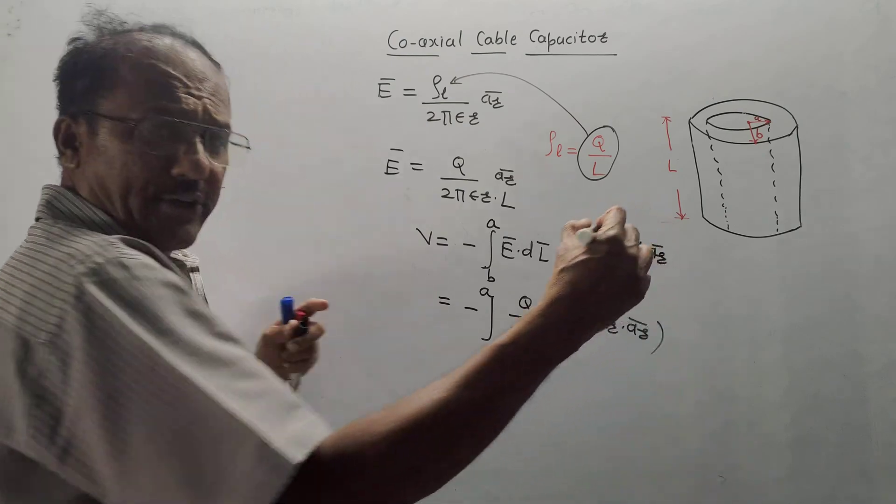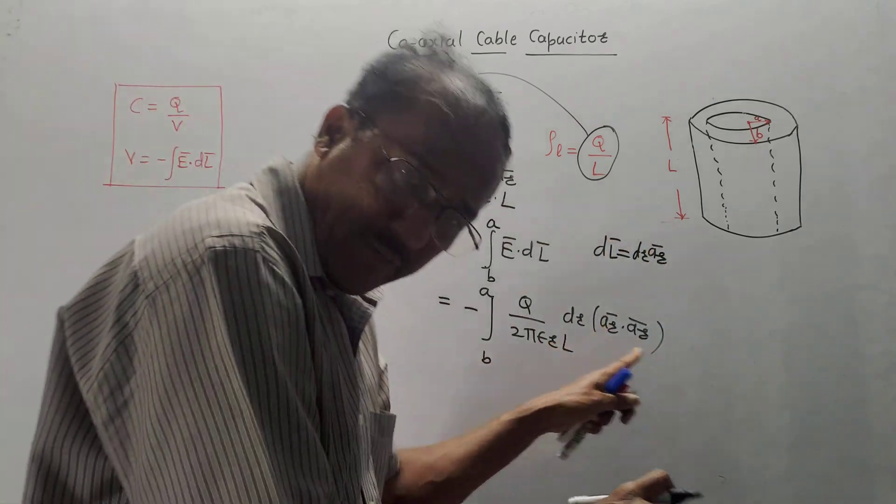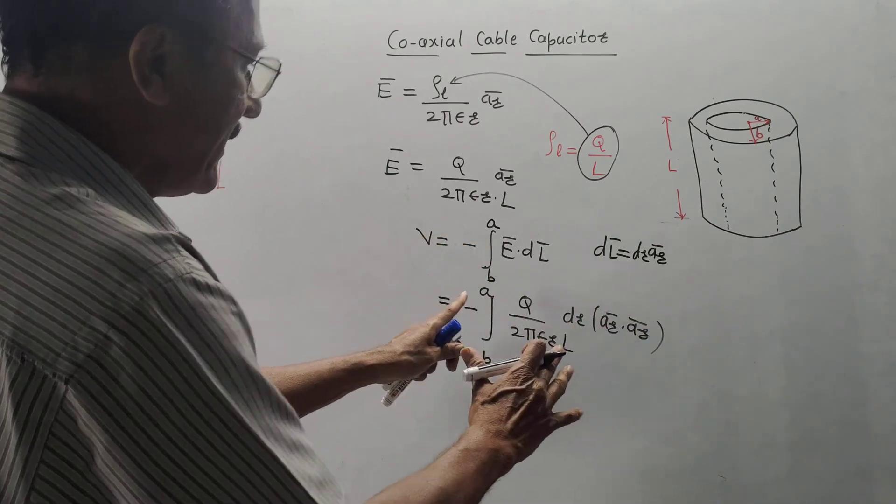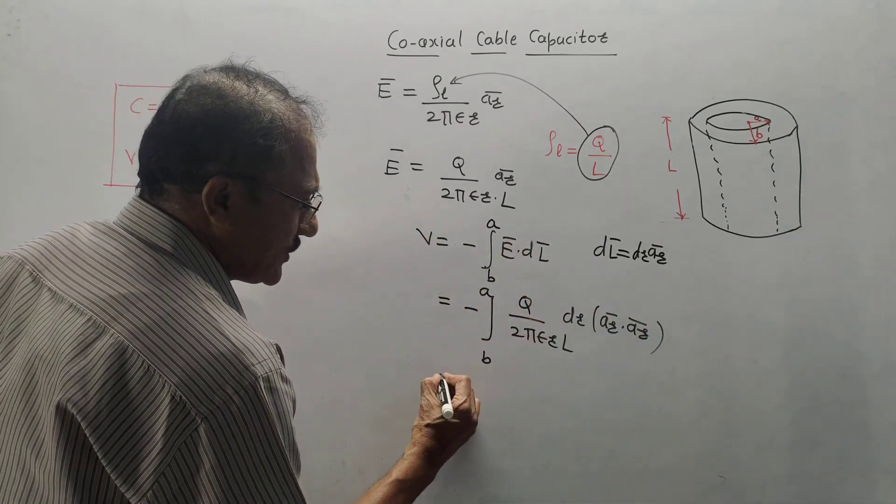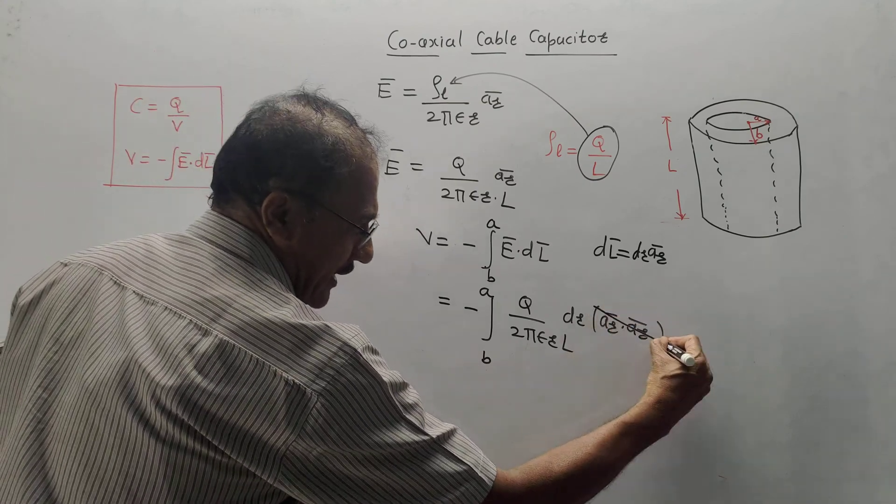When we are taking a dot product, take dot product of unit vectors only and take normal multiplication of remaining terms. I did it accordingly. Now, take the constants outside this equation. AR bar dot AR bar becomes 1.